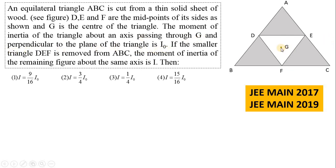That means the axis of rotation is passing through G and the triangle is rotating clockwise or anticlockwise about this axis, which is perpendicular to the plane of the page. So the moment of inertia of the triangle ABC is I₀.